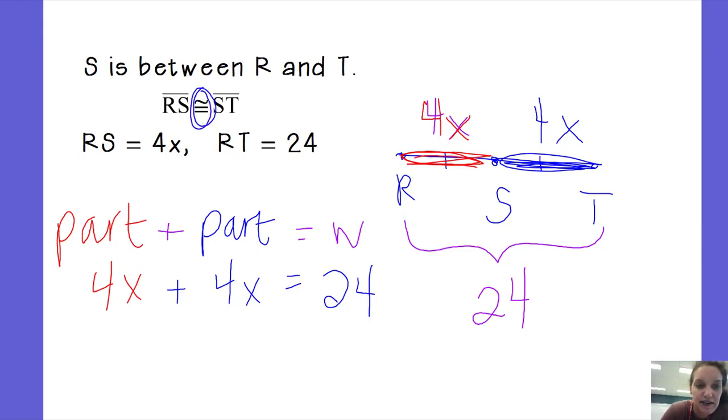4X plus 4X, combined like terms, gives me 8X. Divide by 8 on both sides, and you get X is 3. And it didn't tell me what to find, so we're going to go with that. X is 3.